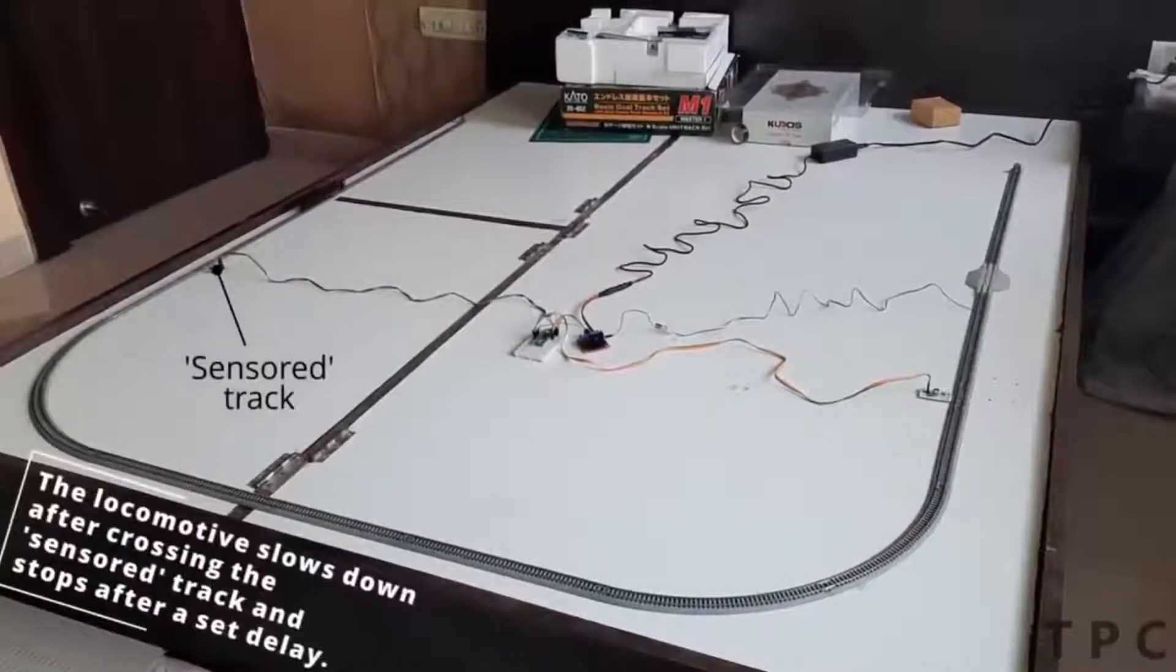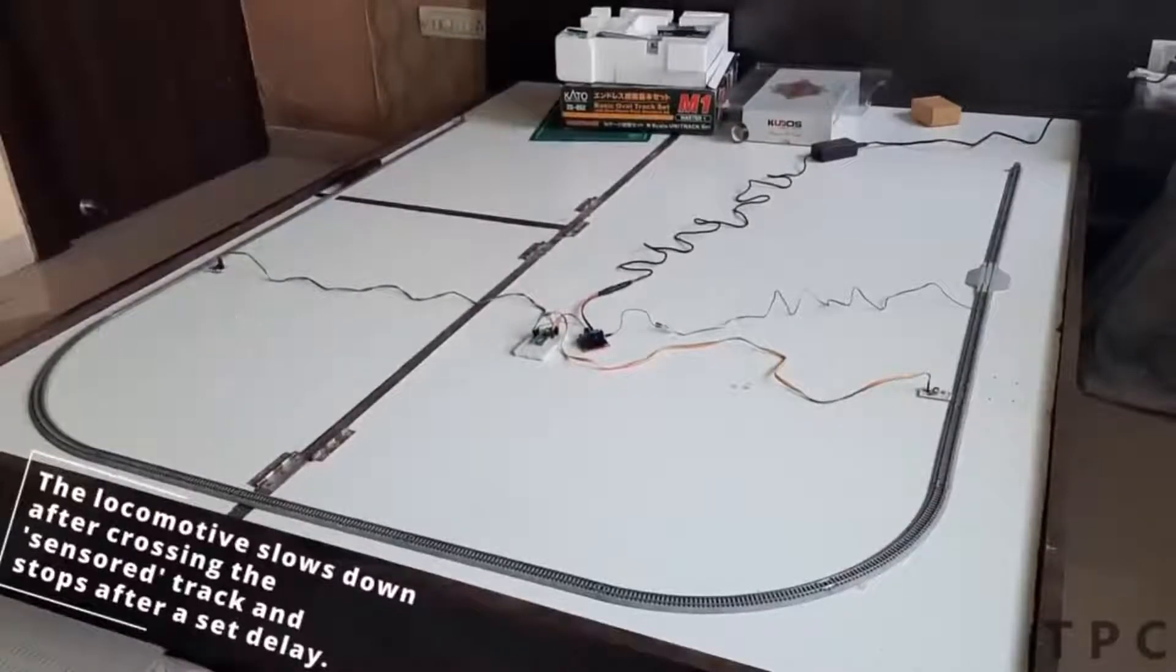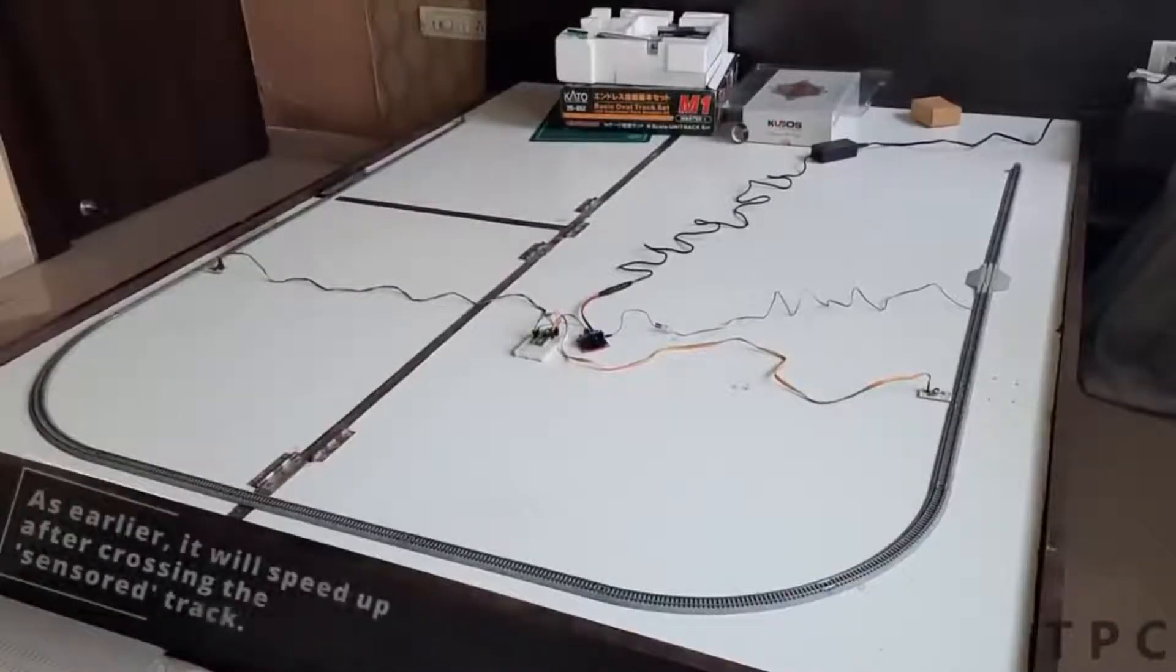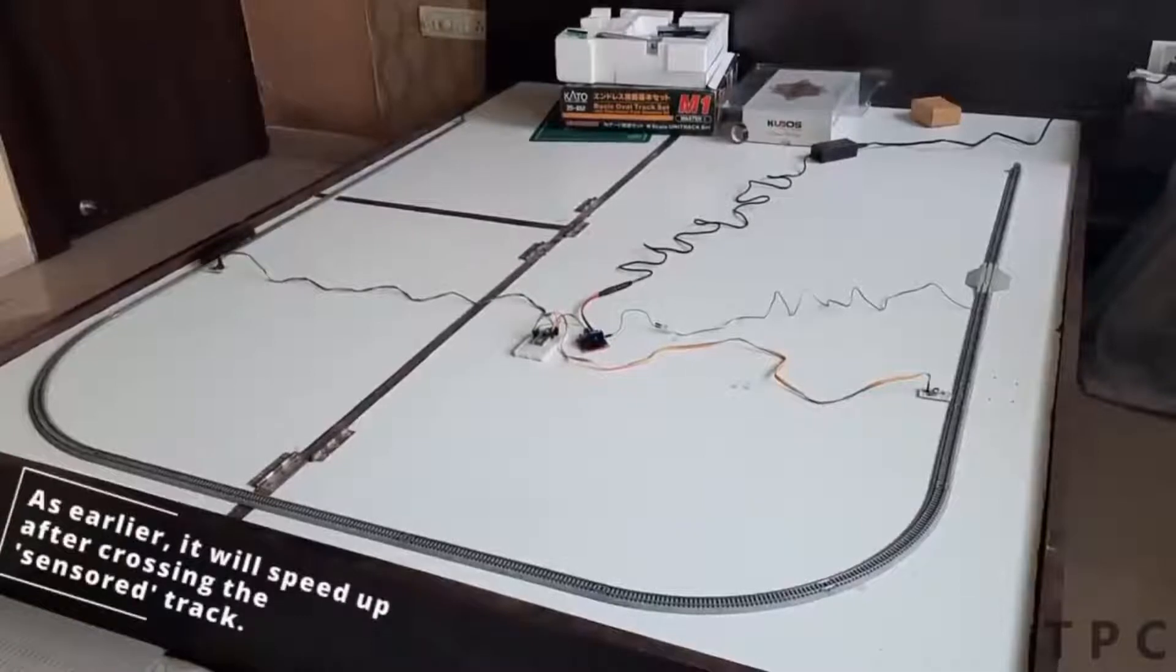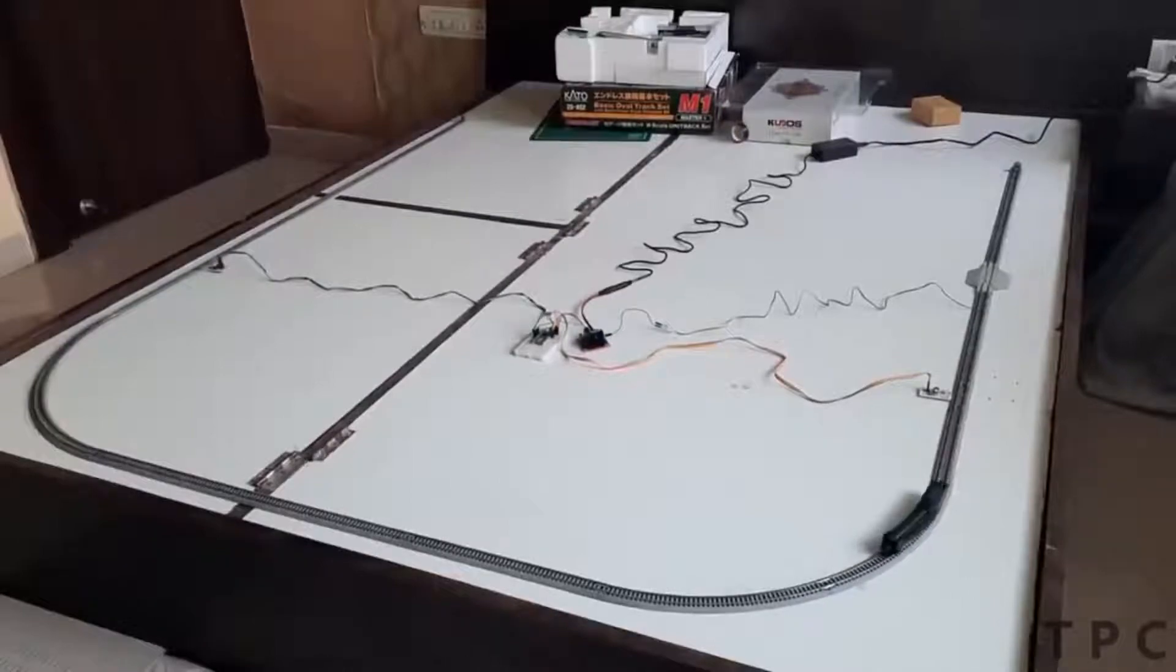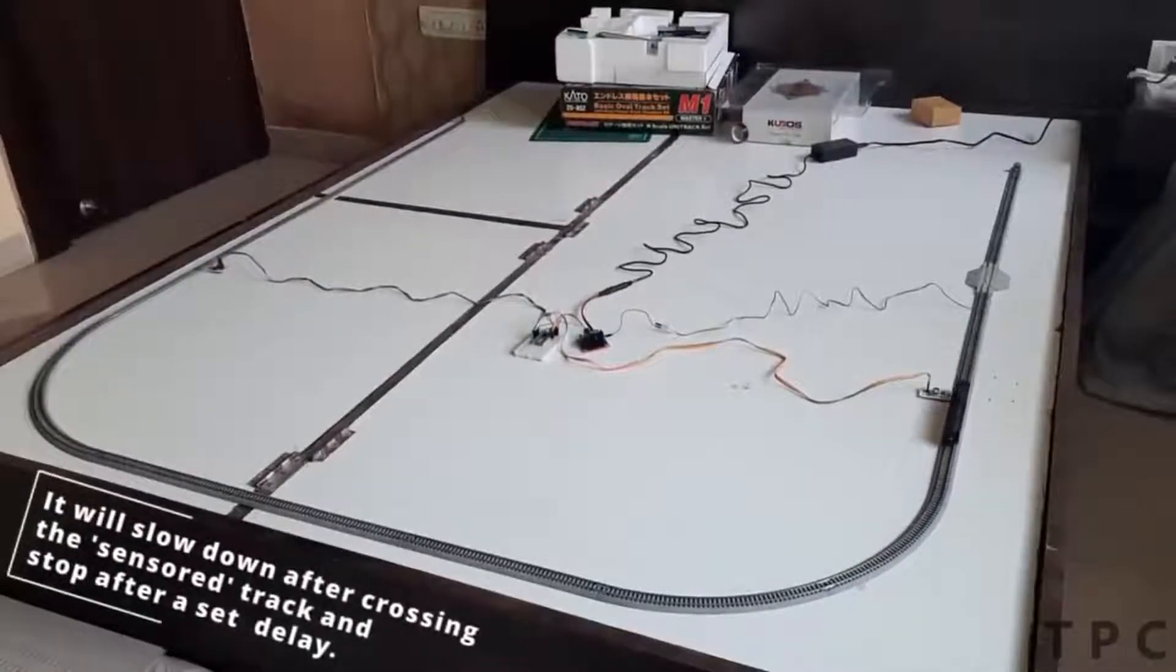A similar sensor slows down the train speed before stopping at its destination. The train stops for a fixed time and follows a similar process to reach its initial position. So how will you rate this project on the scale of 10?